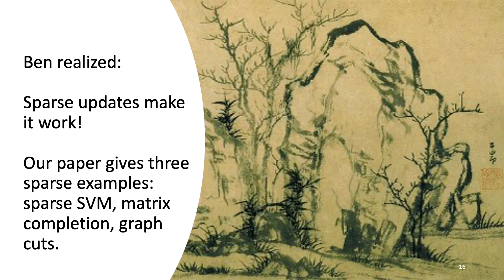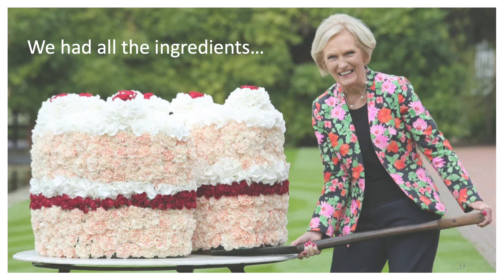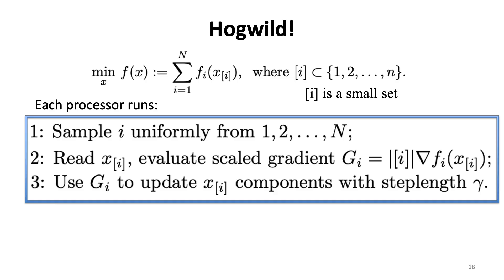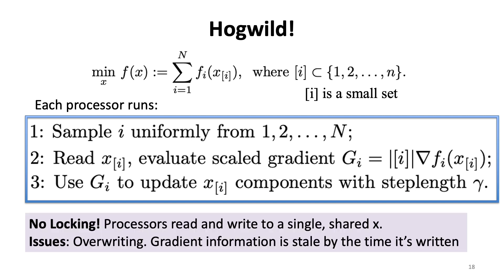So at this stage, like Mary Berry in the original British baking show in 2011, we had all the ingredients. Here's the setup: we assume that the objective is a finite sum of components that each depend on just a subset of the components of the unknown vector x. This subset is typically small and is denoted by bracket i for the ith term in the sum. We assume all processors have access to shared memory containing a single copy of x. All processors run loops of three instructions: pick a random index i; read the components of x needed to evaluate the gradient of f sub i; then write updates to those components of x by moving along step length gamma in the negative gradient direction. There's no locking or coordination. Moreover, it's almost certain that by the time updates are written back into shared memory, they are stale in the sense that the gradient was evaluated at an outdated value of x.